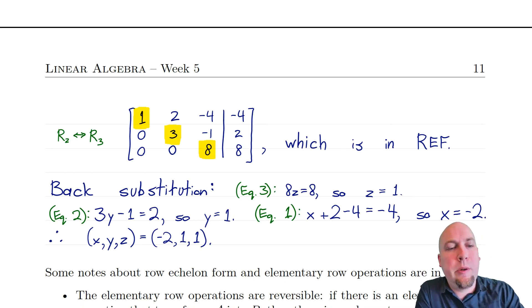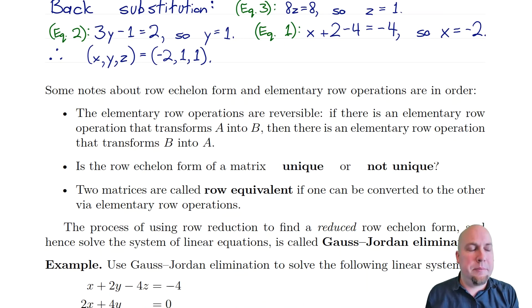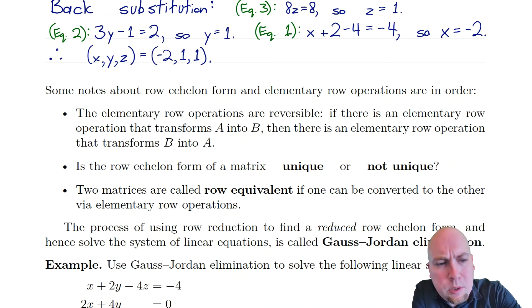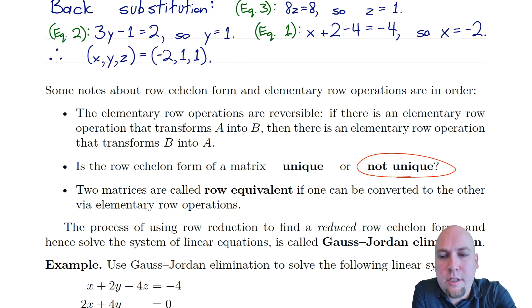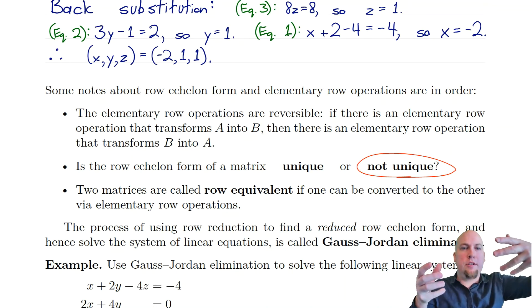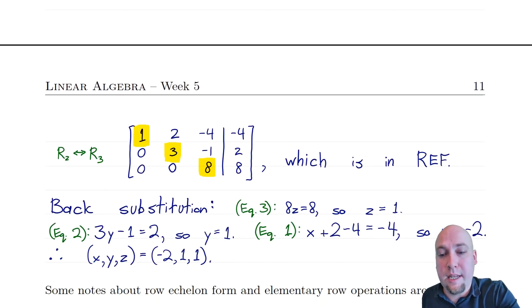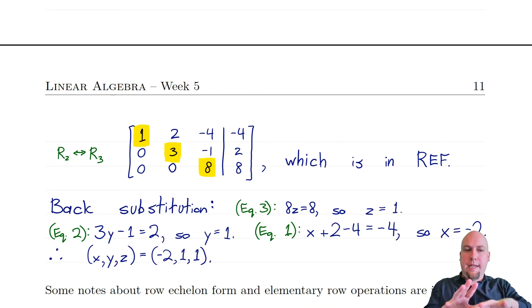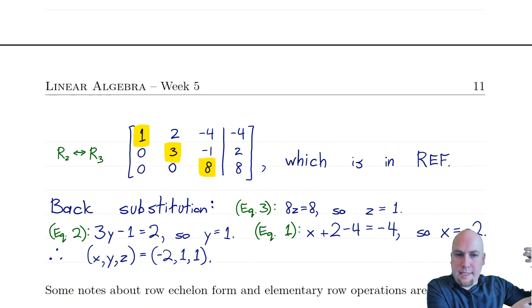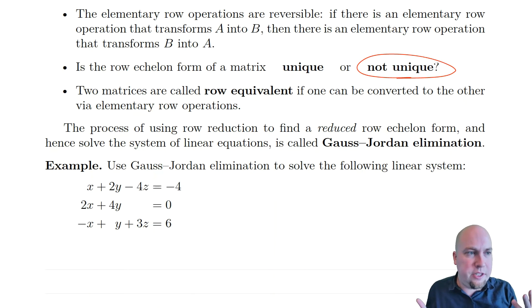This is basically the same procedure from last class, just pinning down the details. One important fact: row echelon form is very non-unique. If you start with some augmented matrix and do row operations, you could bring it to all sorts of different row echelon forms. Another student might do different row operations and get a different row echelon form — and still get the same right answer. That's not wrong; it's just a feature of row echelon forms.